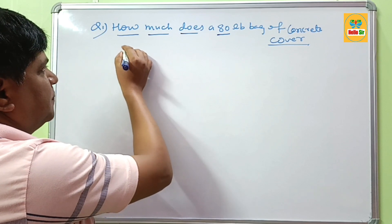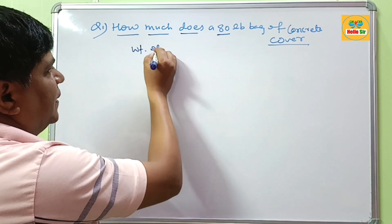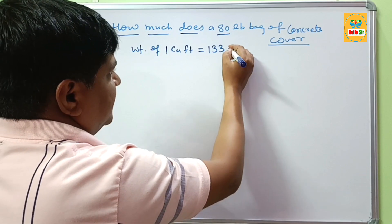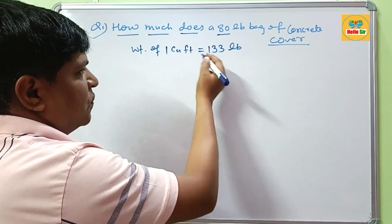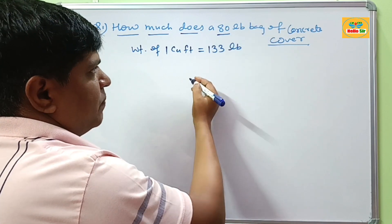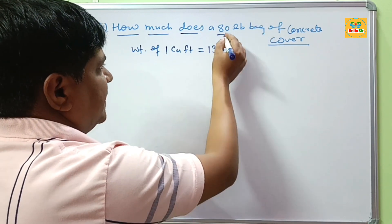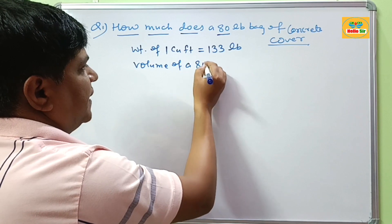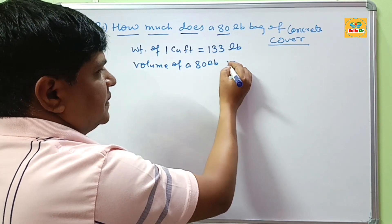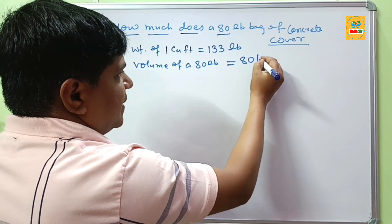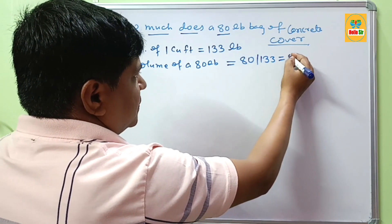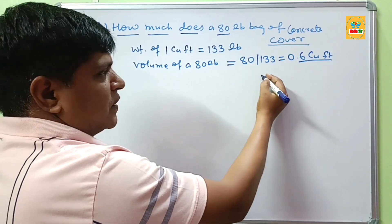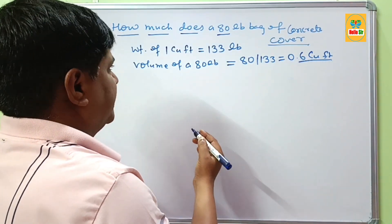Now let's solve this. The typical weight of one cubic foot of concrete is about 133 lb. To calculate the volume of one 80 lb bag of concrete in cubic feet, you divide 80 by 133, which comes out to about 0.6 cubic feet. So the volume of one 80 lb bag of concrete is about 0.6 cubic feet.